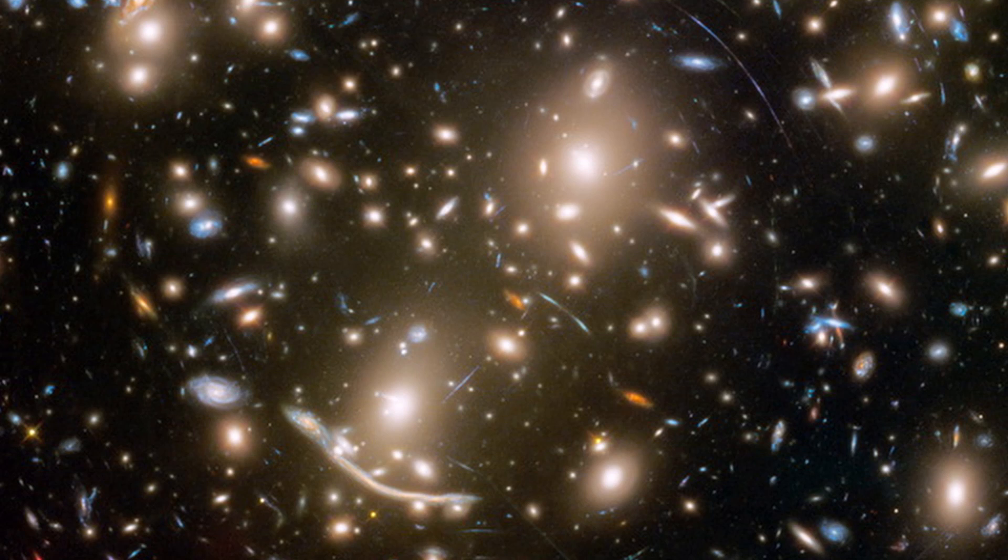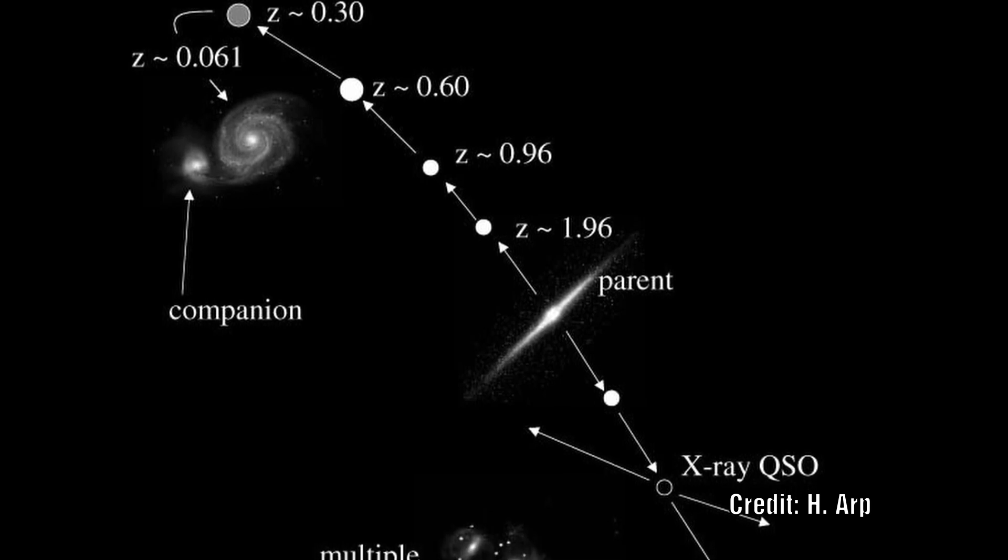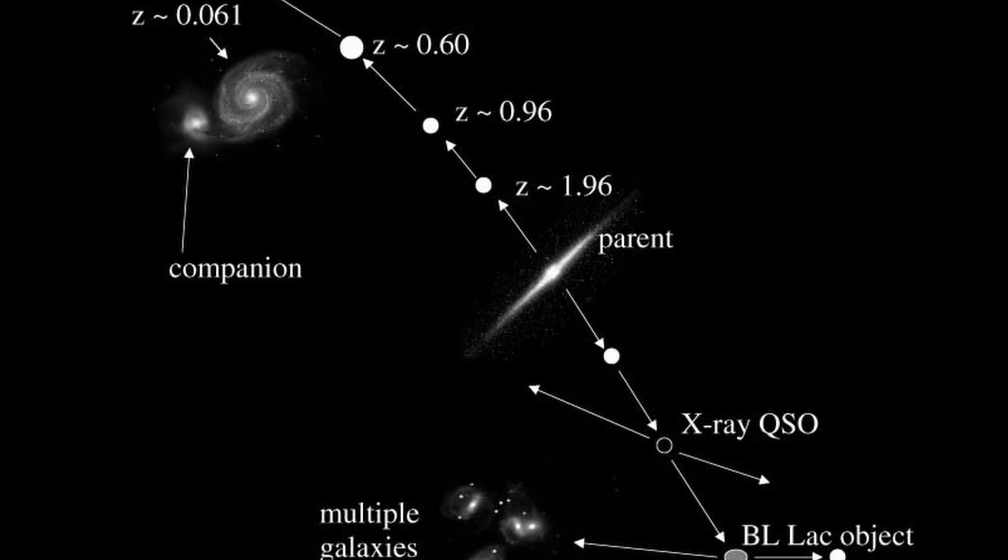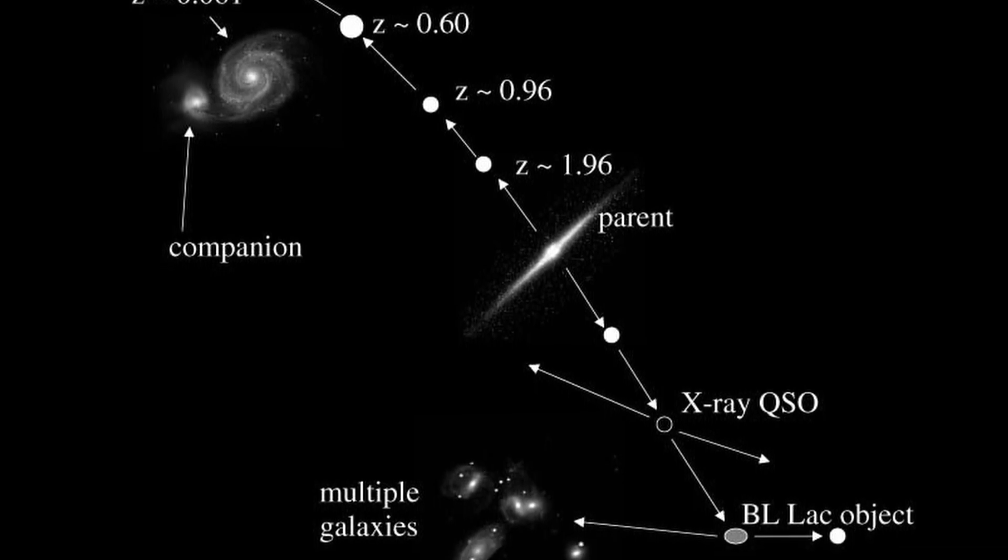Now we know that Halton Arp viewed a birthing process whereby quasars were ejected from active galactic nuclei and that these quasars later turned into normal galaxies.